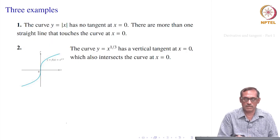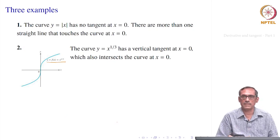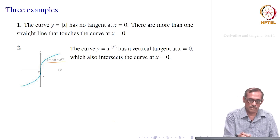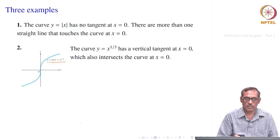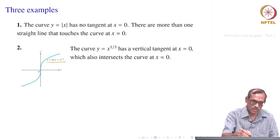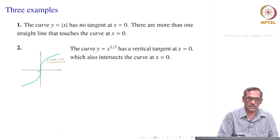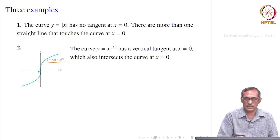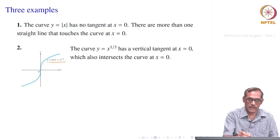Consider the second example: y = f(x) = x^(1/3). At x = 0, which is the origin, our definition would say that the y-axis is a tangent to the curve, because if you change the slope slightly, it will intersect the curve in at least 2 points. The y-axis only touches the curve at 0 — though in the picture they appear very close — so we say it has a vertical tangent at that point.